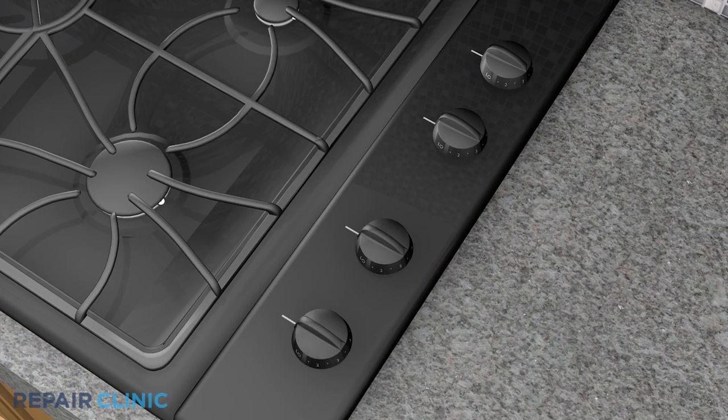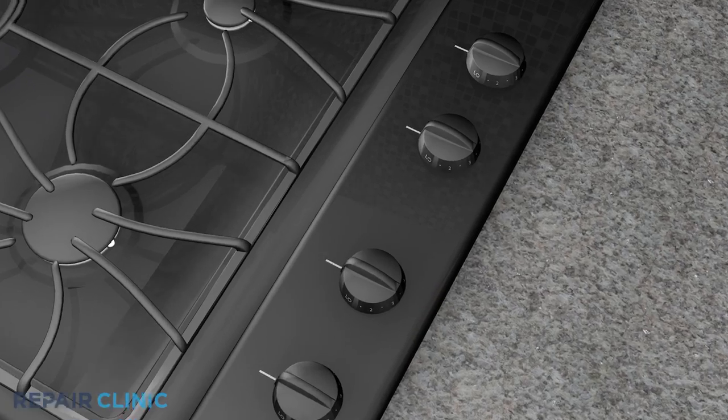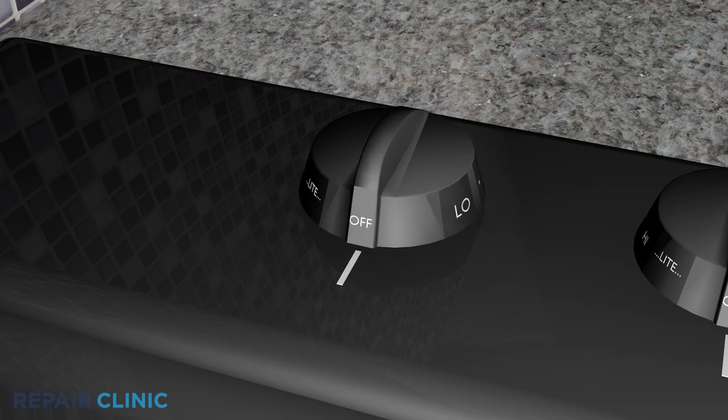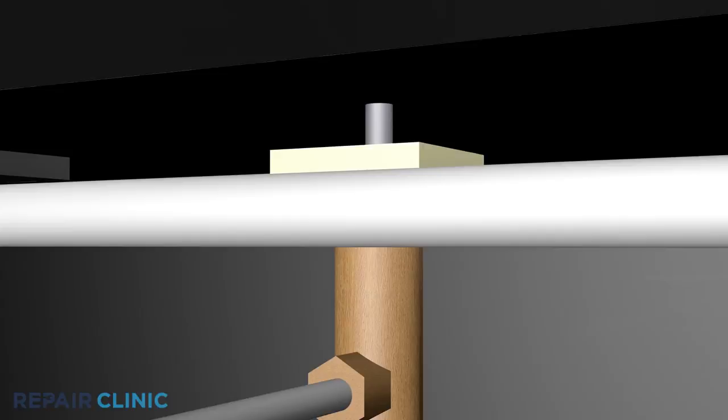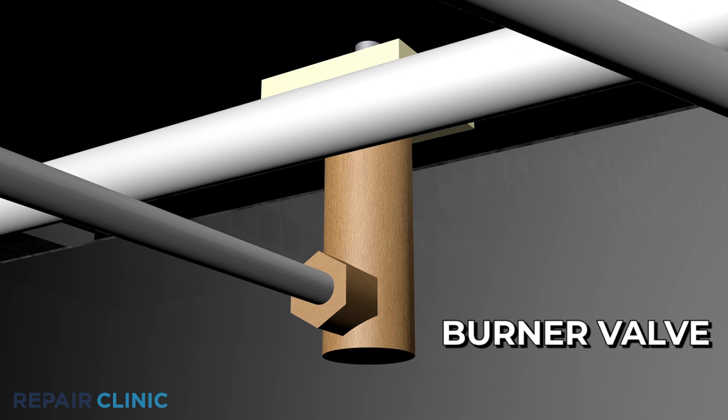Each surface burner knob on the stovetop controls a burner valve. When the knob is turned to the light position, the valve opens, allowing gas to flow from the manifold.